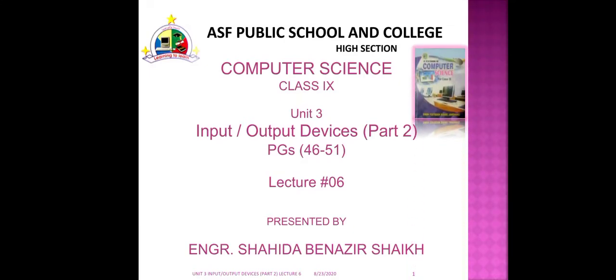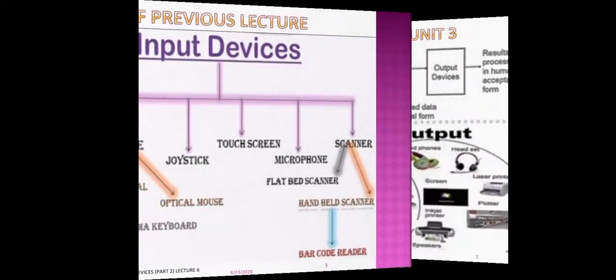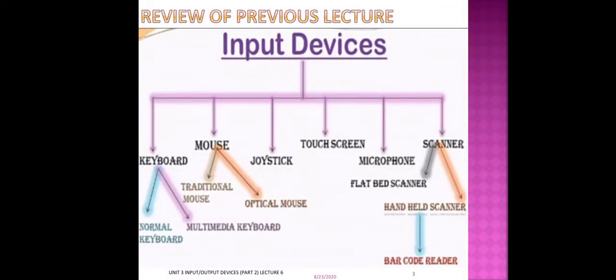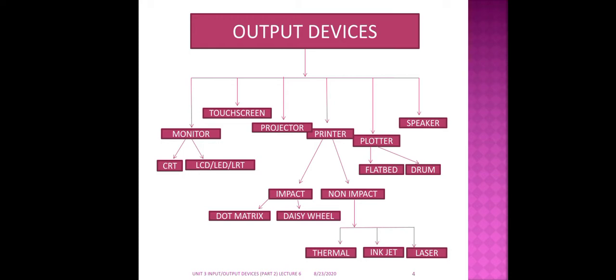Assalamualaikum dear students. Here is your teacher for computer science. We start our lecture from input/output devices, part number two. Before starting, we will have a review of the previous lecture. Here you see the mind map of unit number three, covering input devices which you studied earlier: keyboard, mouse, joystick, touchscreen, microphone, and scanner — shown on the screen in tabular form. Now output devices, which is our lecture for today, shown in tabular form.